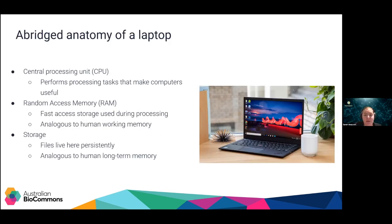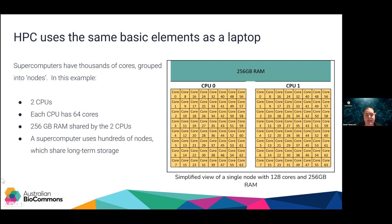Thanks Georgie. To get you familiar with the main concepts of how a computer works, there are three main parts. The first is the CPU — the central processing unit — which does the processing and makes computers useful. The second is RAM — random access memory — which is fast-access storage used during processing, like human working memory: when you shut off the computer, it all goes. And then storage is where files live persistently — more like human long-term memory. HPC uses the same basic elements as a laptop, there's just more of them.